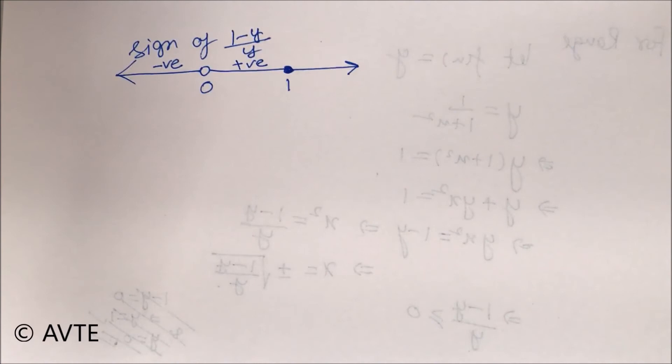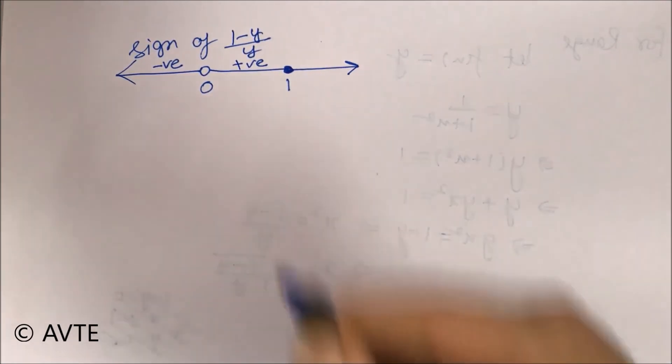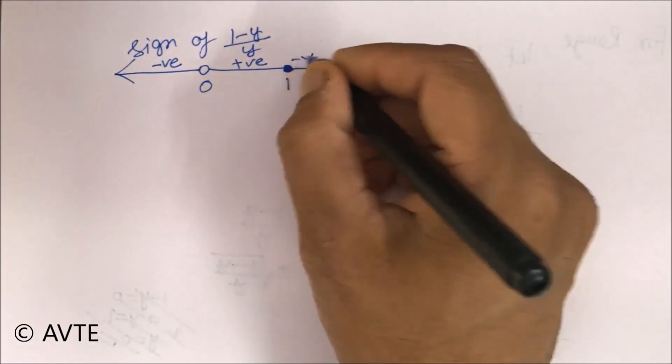Similarly, put any number between 1 and plus infinity. You will see that denominator is positive but numerator is becoming negative. So the net effect will be negative.